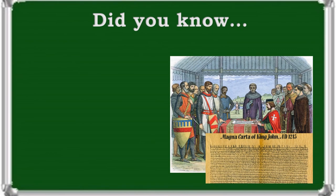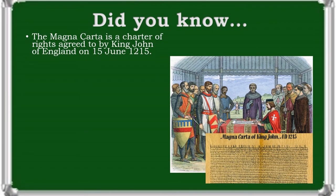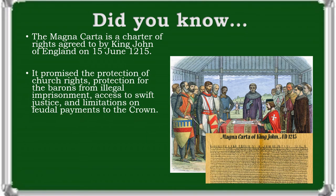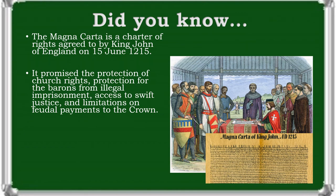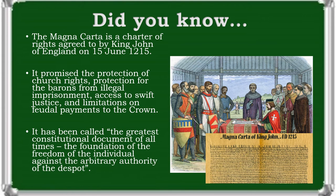The Magna Carta is a charter of rights agreed to by King John of England on the 15th of June, 1215. It promised the protection of church rights, protection for the barons from illegal imprisonment, access to swift justice, and limitations on feudal payments to the crown. It has been called the greatest constitutional document of all times — the foundation of the freedom of the individual against the arbitrary authority of the despot.